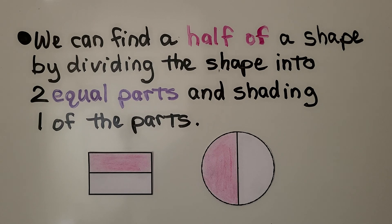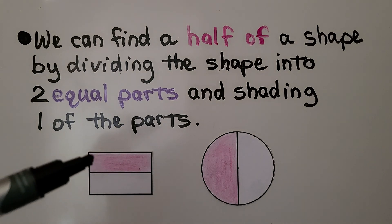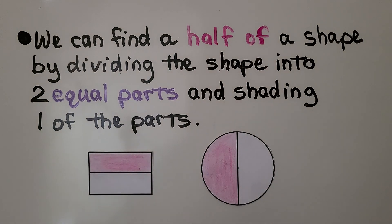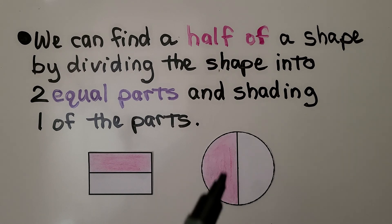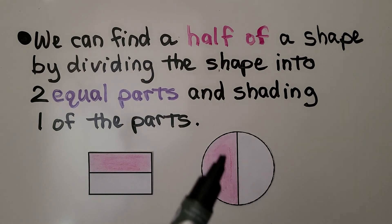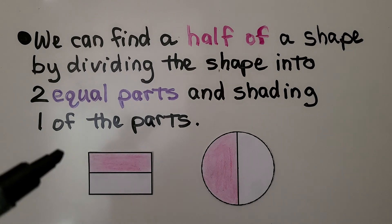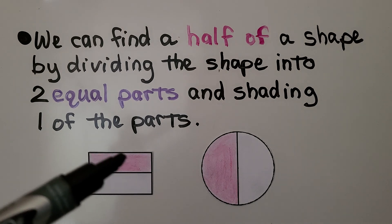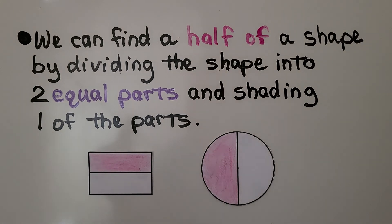We can find half of a shape by dividing the shape into two equal parts and shading one of the parts. We divided the circle into two equal parts and shaded one of the parts. This pink part is half of the circle. This pink part is half of the rectangle.